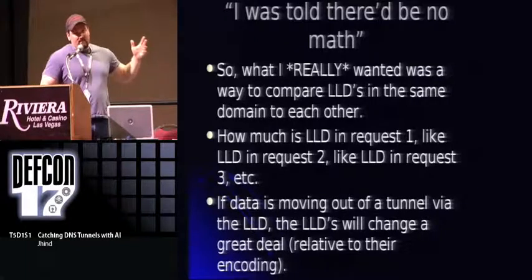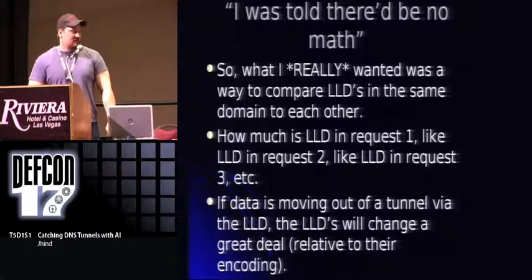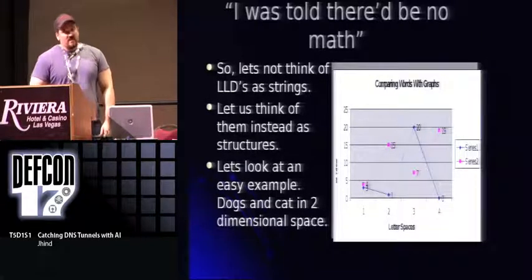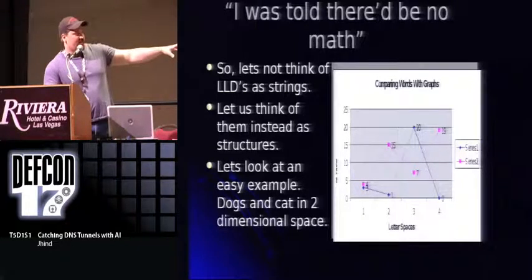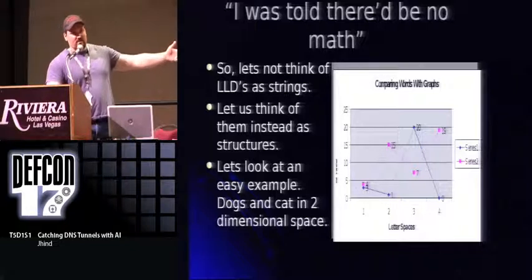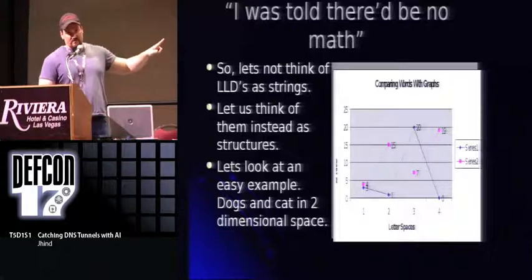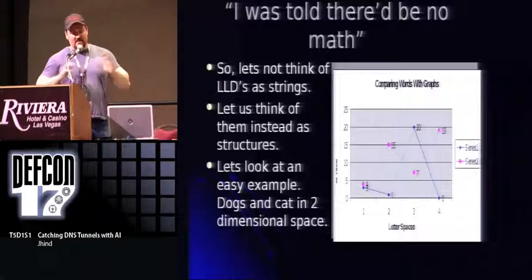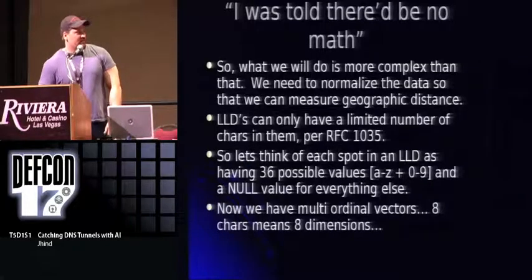If data is moving via a DNS tunnel, you should see the LLDs change a great deal — there should be a great deal of change between request and request. Let's stop thinking of them as strings and start thinking of them as geometric structures. Here's a two-dimensional graph of 'dog' and 'cat' — you can see they're different, and we can measure the difference between the two words. The problem is we're measuring the difference between letters: it has no concept of a set, no concept of words. So that wasn't good enough — I tried this and it failed.